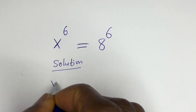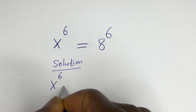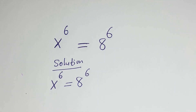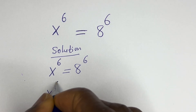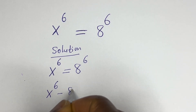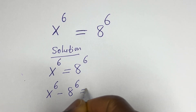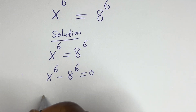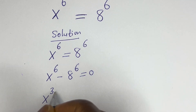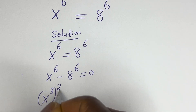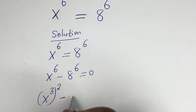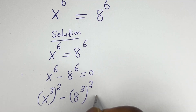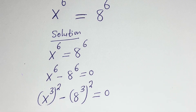We have s to the power of 6 is equal to 8 to the power of 6. This becomes s to the power of 6 minus 8 to the power of 6 is equal to 0. Then s to the power of 6 can be rewritten as (s to the power of 3) squared, and 8 to the power of 6 can be rewritten as (8 to the power of 3) squared, equal to 0.